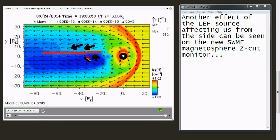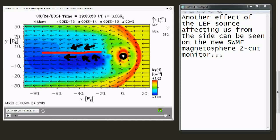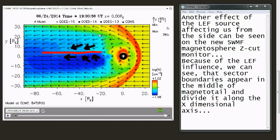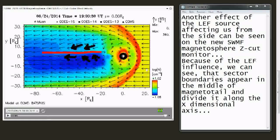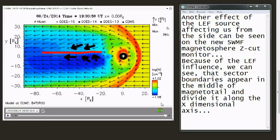Because of the low energy field influence we can see that sector boundaries appear in the middle of magnetotail and divide it along the x-dimensional axis.